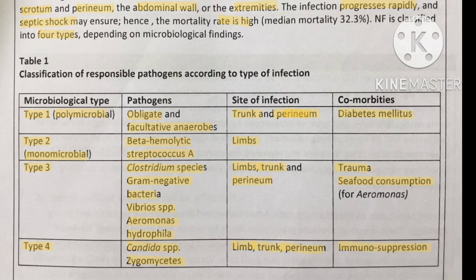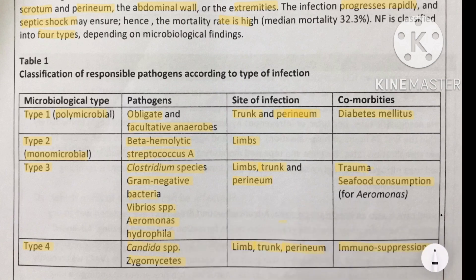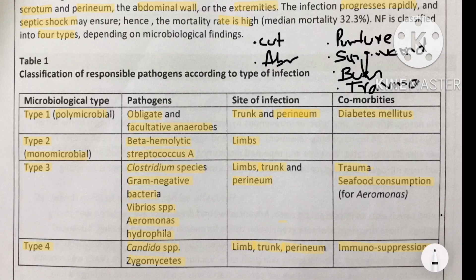Several factors can predispose to necrotizing fasciitis by allowing bacteria to penetrate deeper into the skin. These include punctured skin, infected surgical wounds, burns, trauma, minor cuts to the skin, and abrasions. All of these can support bacterial invasion and lead to development of necrotizing fasciitis.